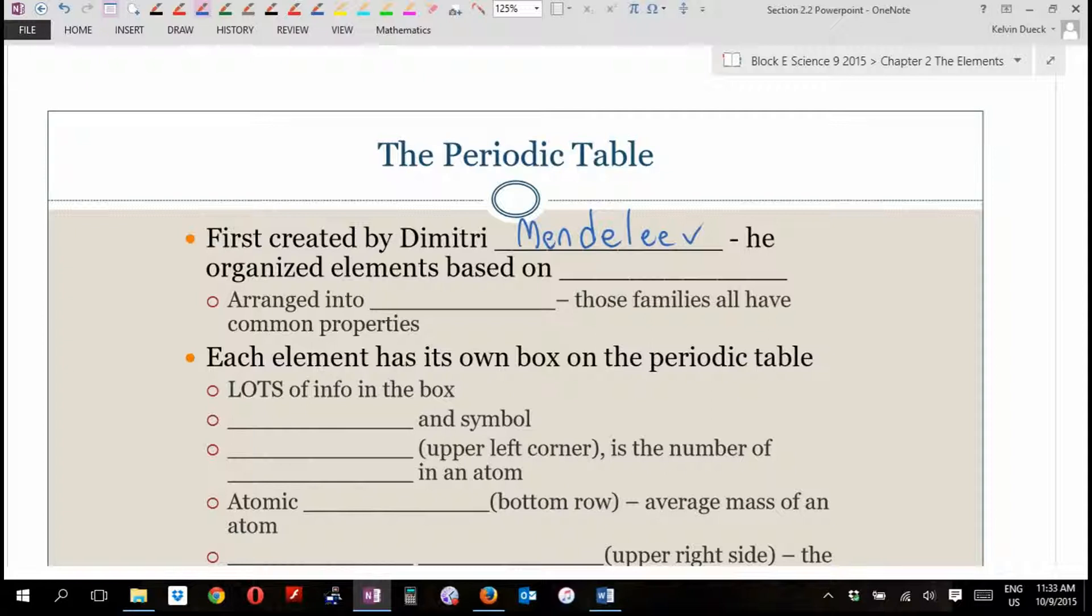So what he did is he arranged the elements, he organized the elements based on properties that they had, how explosive or reactive they were, what they looked like, what their mass was, how they combined with other stuff. He tried a bunch of different variations before he tumbled onto the one that you see on your chart. But by the end of this unit, you'll say, oh, that totally makes sense.